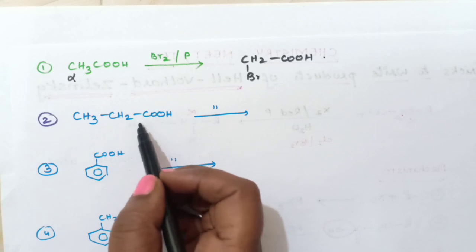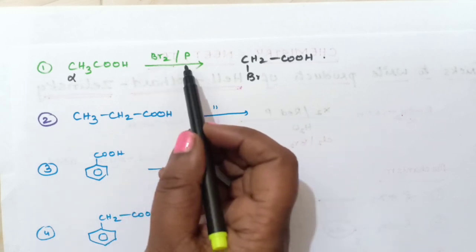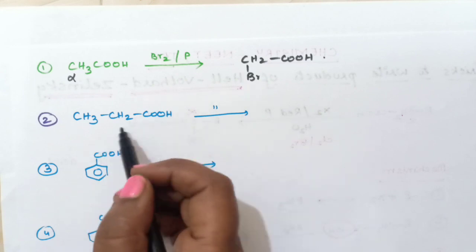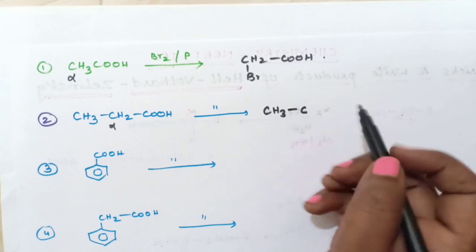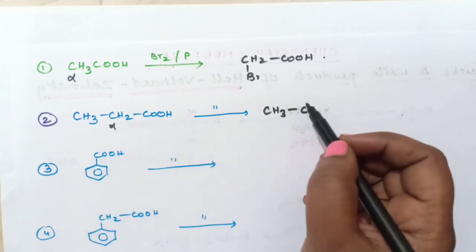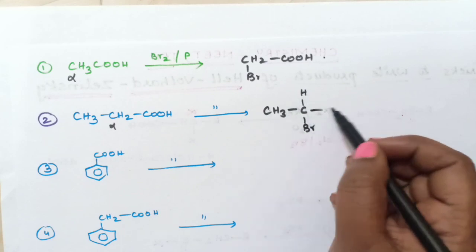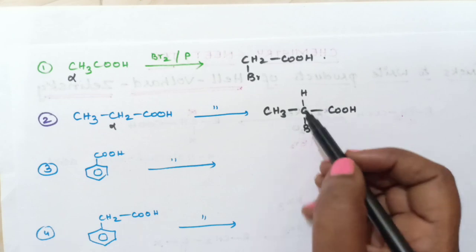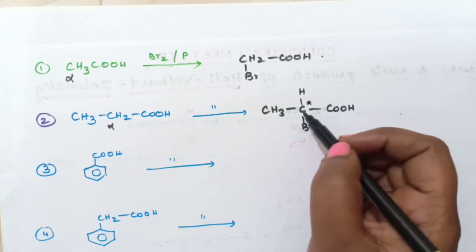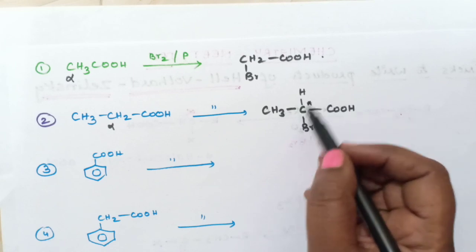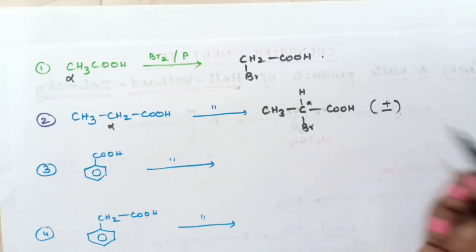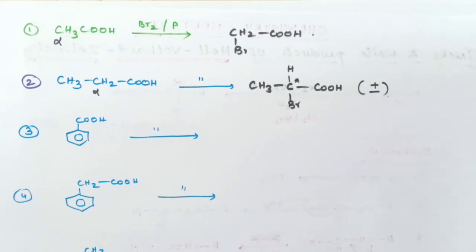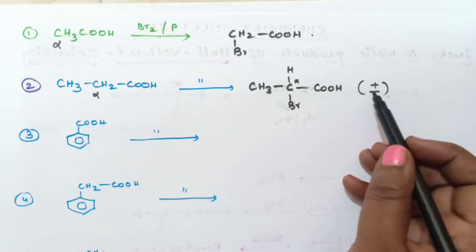For the second example, the acid is again treated with bromine and red phosphorus. The alpha carbon has two alpha hydrogen atoms; one is replaced by bromine, giving CH₃CH(Br)COOH. Note that this alpha carbon is a chiral carbon — it has four different groups — so the product exists in two forms: the plus (+) and minus (−) enantiomers.